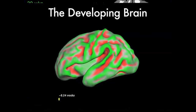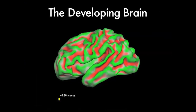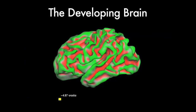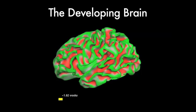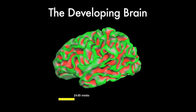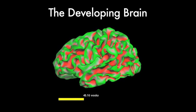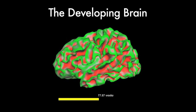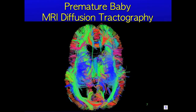Here we show how we can use the computer model to create a movie. We are just showing the folding and not the increase in brain size, so you can see the spatial orchestration of the folding with age. We can also use a special MRI technique called diffusion tractography to see how the brains are wired or connected together.